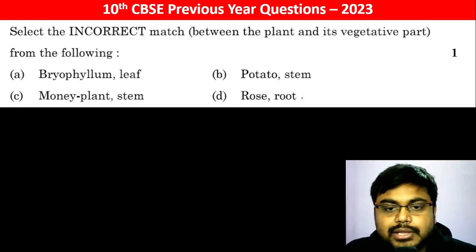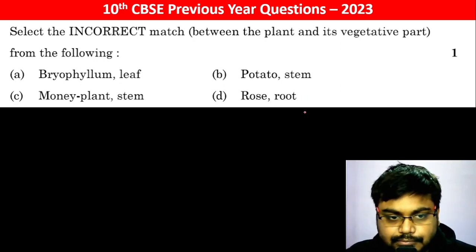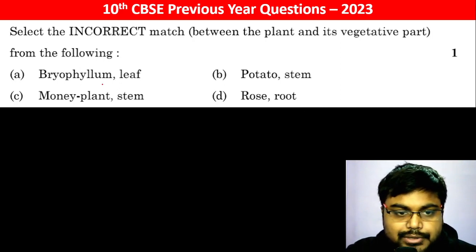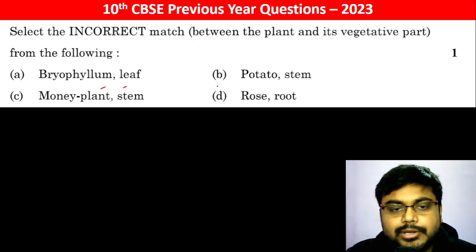Select the incorrect match between the plant and its vegetative part from the following: Bryophyllum - leaf, potato stem - stem.